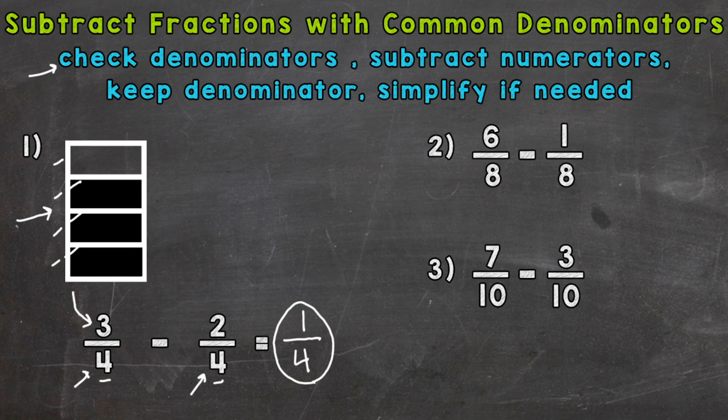Now we are subtracting or taking away two fourths. So let's cross off two of these fourths. One, two.